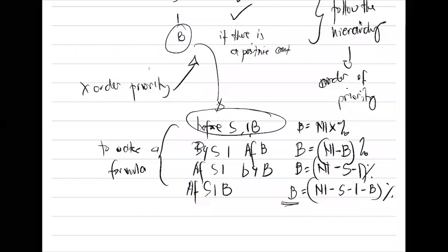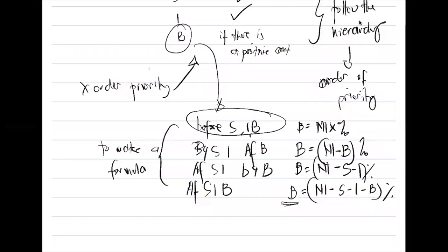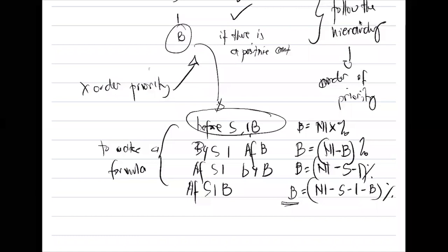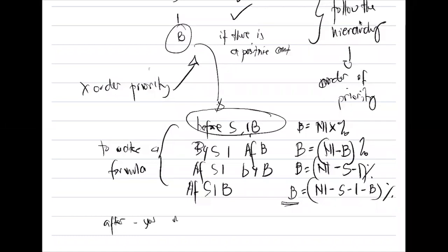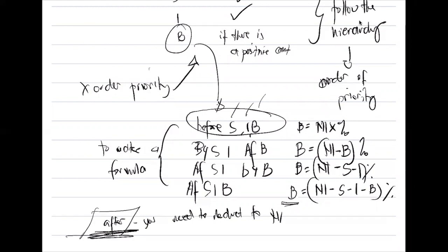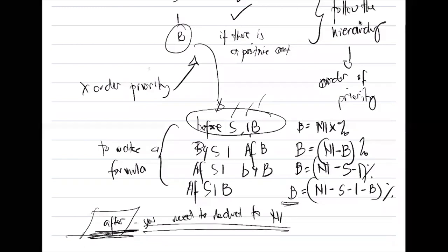Whatever the combination, just follow the rule: when we say 'after,' you need to deduct it from net income. If there is no 'after,' you will not deduct anything from net income. For bonus before salaries, interest, and bonus — there is no 'after' — so the formula is simply Net Income × percentage.